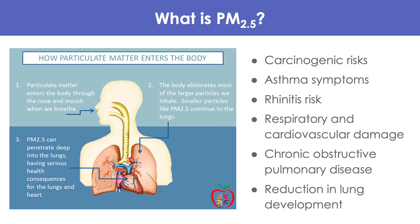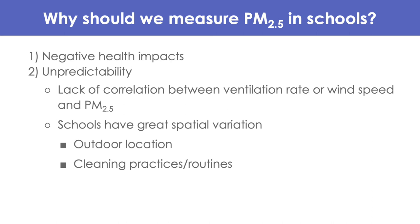PM 2.5 has also been shown to cause respiratory and cardiovascular damage and chronic obstructive pulmonary disease. In an 8-year study examining 1,759 children exposed to PM 2.5 in Southern California schools, lung development was reduced in those exposed to higher levels of air pollution. As a result, there is a huge range of possible PM concentration and composition due to variation between school location, building materials, and other variables. Another reason to measure is unpredictability — ventilation management often solves CO2 issues, but for PM 2.5, studies found no significant correlation between ventilation rate and PM 2.5, emphasizing the need to measure more schools.